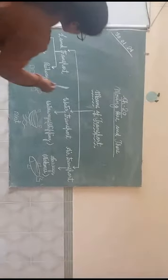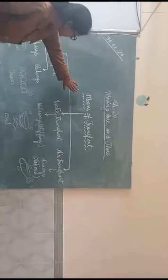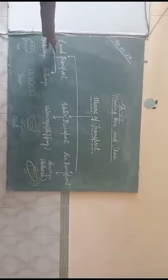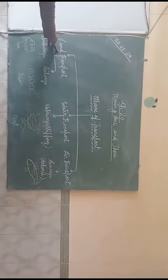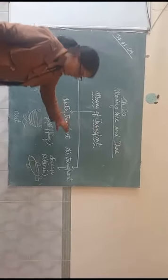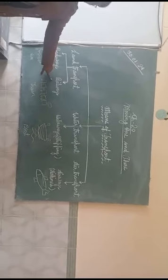Now children, look at the board. Means of transport is divided into three parts: first is land transport, second is water transport, and third is air transport. Land transport is divided into two parts: roadways and railways.